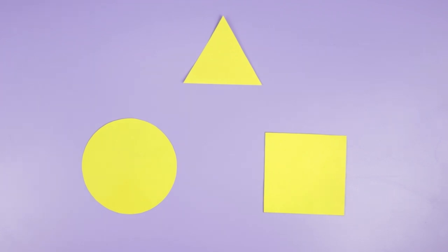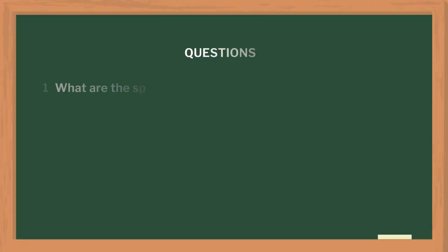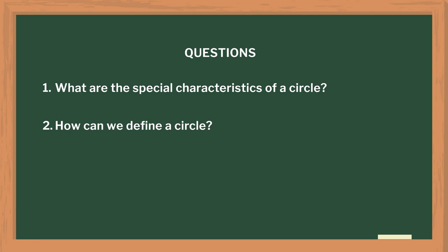Discussion on the observations has to be carried out in groups. After this activity, we have to emphasize the similarities and differences between different geometrical shapes by asking questions. Once the characteristic features of a circle are discussed, we can move on to derive the definition of the circle with the students. We can ask questions like: what are the special characteristics of a circle? How can we define a circle? What is a circle?